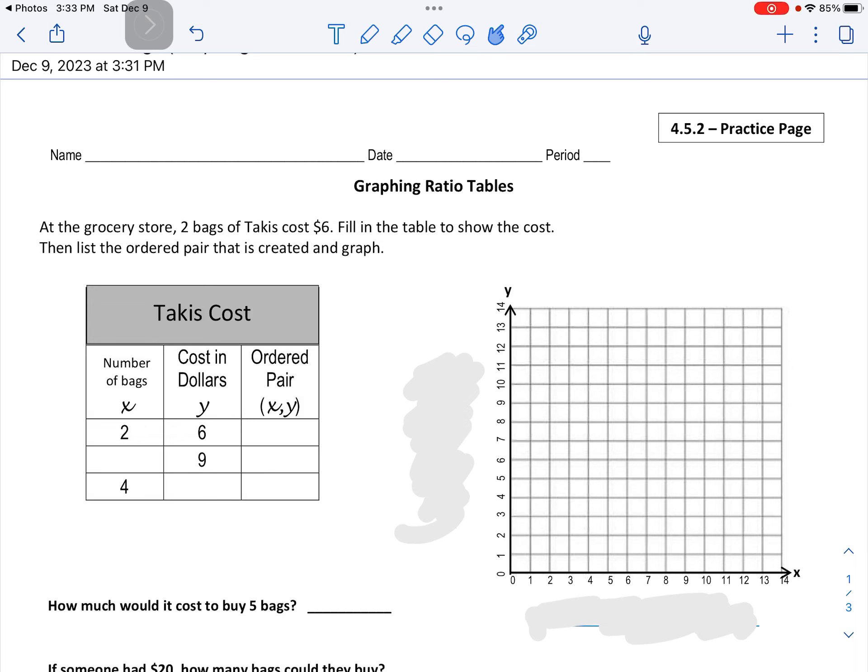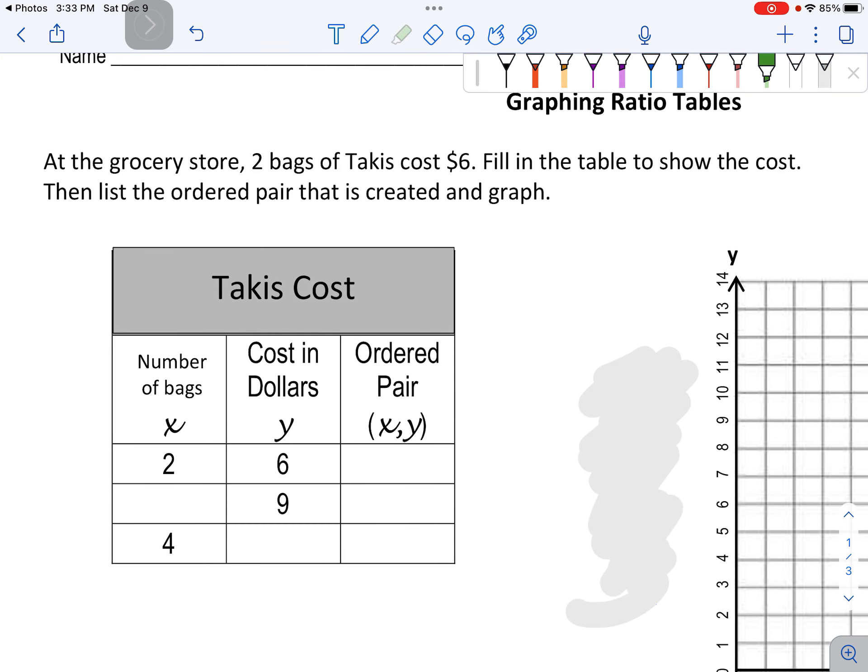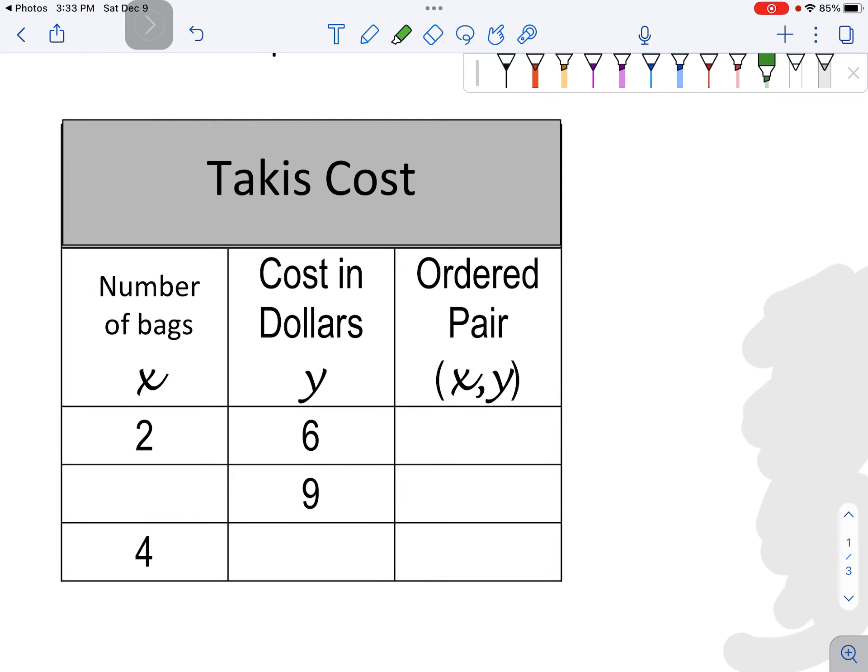Hey 6th grade, here is your help video for 4.5.2 about graphing ratios. The first problem is about Takis. At the grocery store, two bags of Takis cost $6.